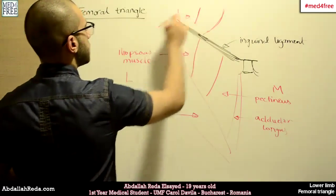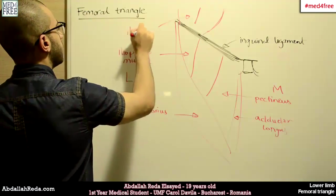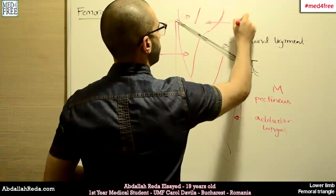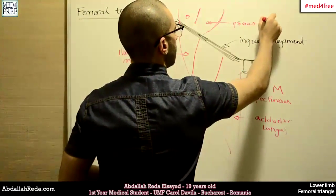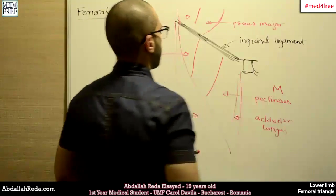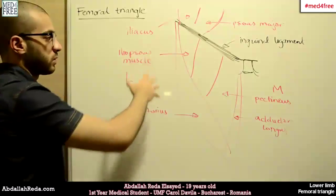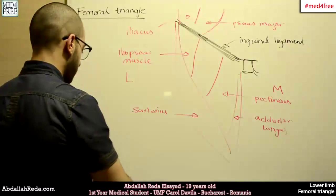This is Iliacus. And this is Psoas Major. Pectineus and Iliopsoas Muscle form the floor of the Femoral Triangle.